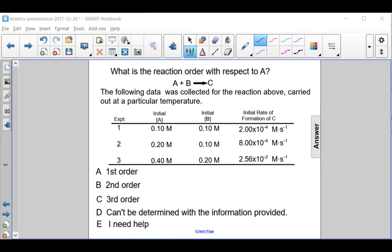We can find this pretty easily just by looking at the data here. From here to here, the concentration of A is doubling, and the effect on the rate is only a result of substance A because substance B is remaining the same.